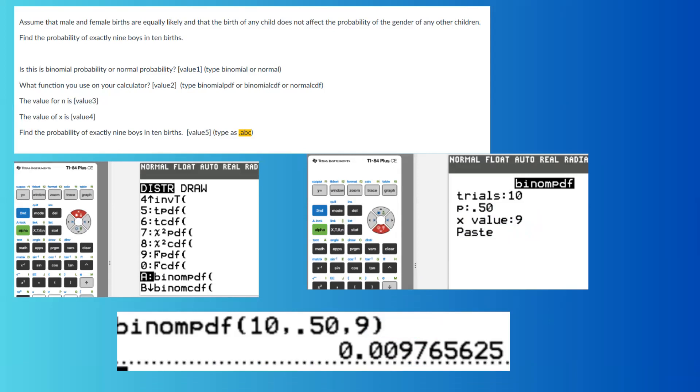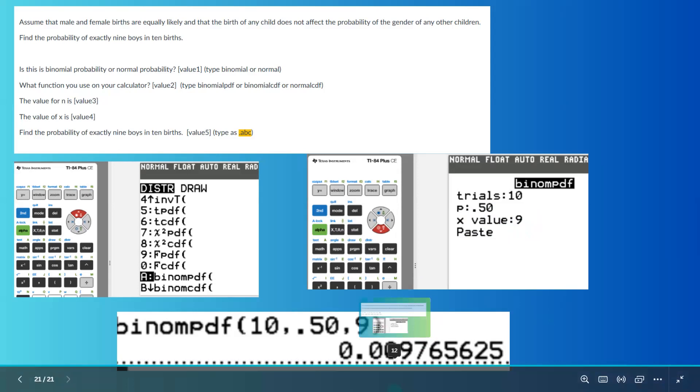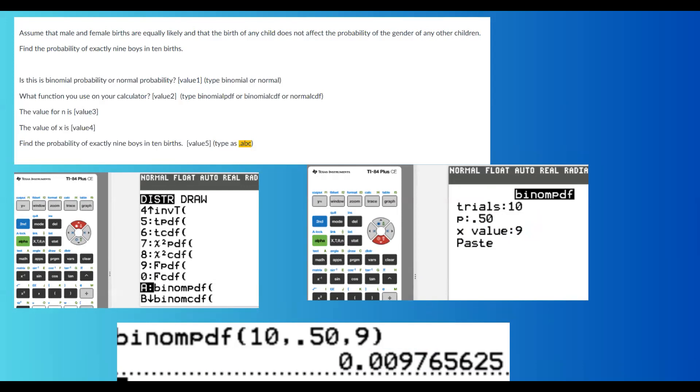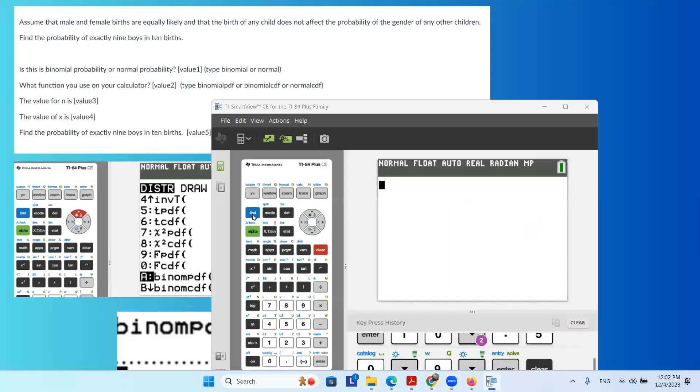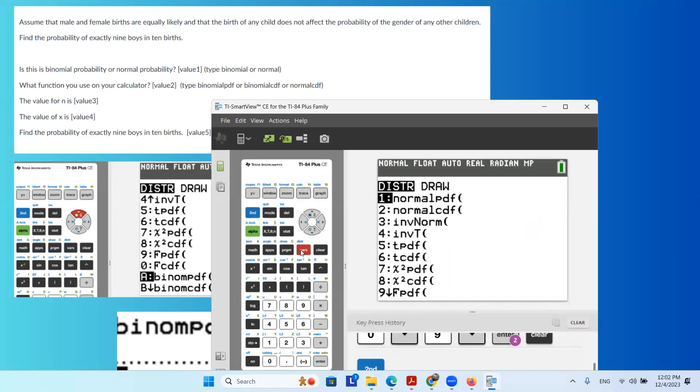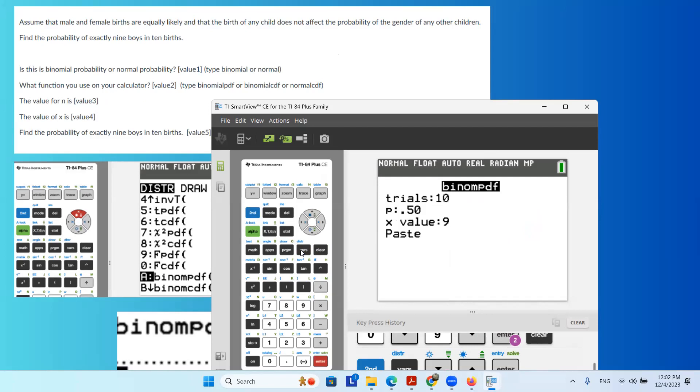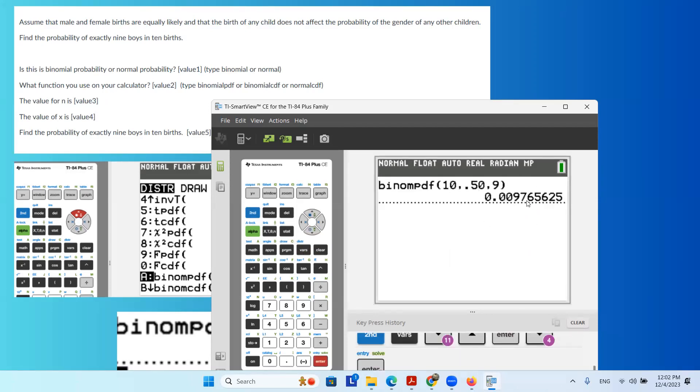Let me show you how to use your calculator and work on this question directly. You're going to go to second, vars, and then find binomial pdf. The number of trials is 10, 0.50 is probability of success, and x value is 9. When you do the computation, this is the probability that you see, which is about one percent.